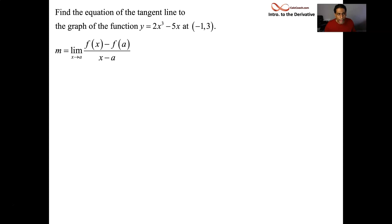And so we want to find the limit as x goes to negative 1, f(x) minus f(-1), all over x minus that negative 1. So we put our f(x) function in there. Negative 1 has already been plugged in. We get a 3 out of that. So the value of a is negative 1. The value of f(a), then, is a 3. And so we get our function 2x³ - 5x. We take away 3 from that. We divide by x plus 1.